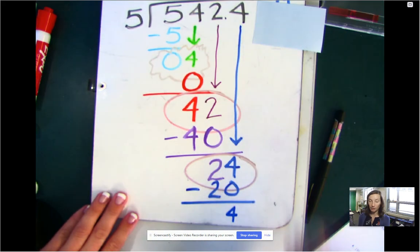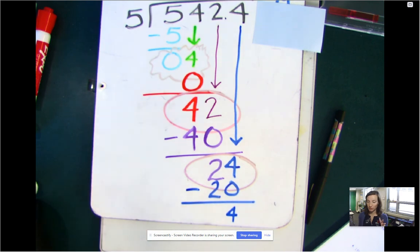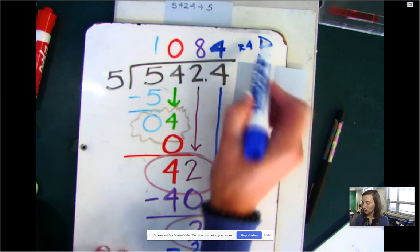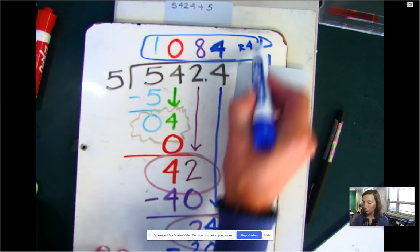24 minus 20 is four. Now I would bring down another number, but there's nothing left to bring down. So this is my remainder. So my answer was 1084 remainder four.